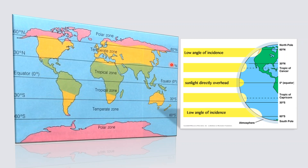Away from the tropical region, beyond 30 degrees north to 60 degrees north, the temperature is moderate because the sun's rays are passing through a larger area of the atmosphere. These areas are known as the temperate regions and fall on either side of the 30 degrees north and 30 degrees south latitude. Beyond that, the angle of incidence is very low and these areas come under the polar zone.